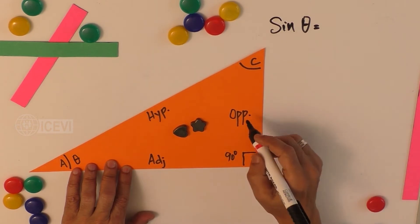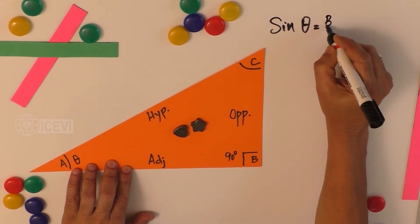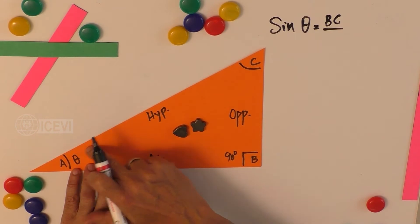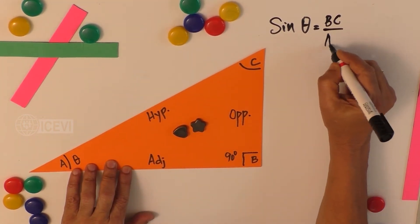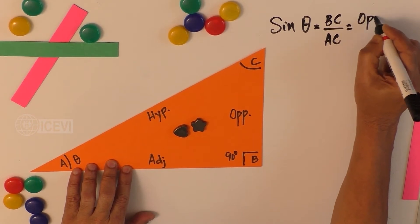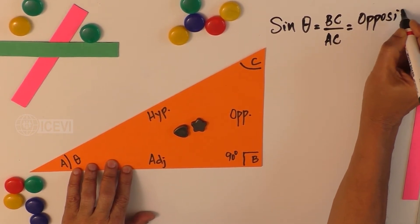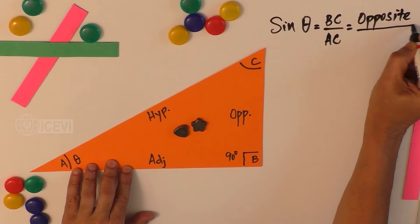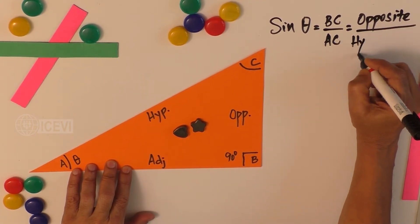opposite? That is BC. And what is hypotenuse? That is AC. That is nothing but opposite divided by hypotenuse.